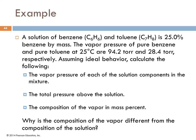Example: a solution of benzene and toluene is 25% benzene by mass. The vapor pressures of pure benzene and pure toluene at 25°C are 94.2 and 28.4 torr, respectively. Assuming ideal behavior, calculate the vapor pressure of each component in the mixture, the total pressure above the solution, and the composition of the vapor in mass percent.